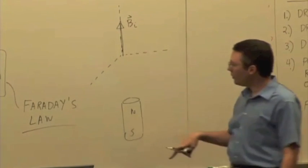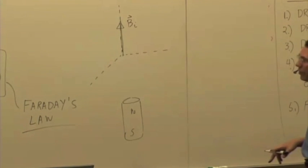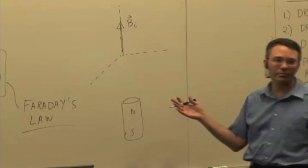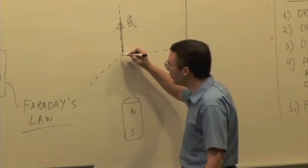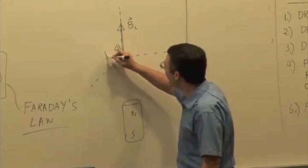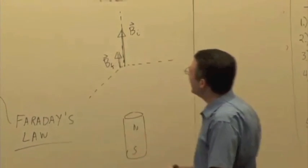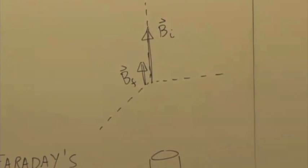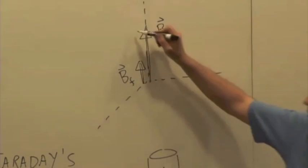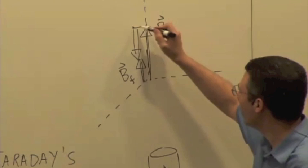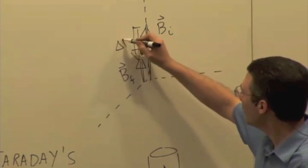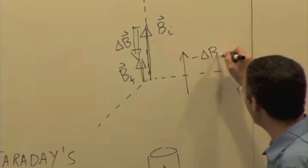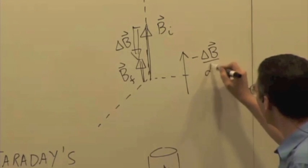If I move the magnet farther away, B final is up, but smaller. So there's B final. Delta B is down. Delta B is down, but negative delta B is therefore up. So that's delta B, negative dB/dt, or negative delta B over delta T is pointing up.